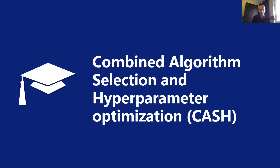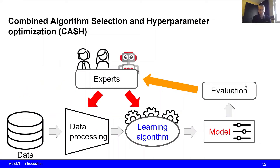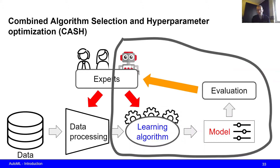In this video we're going to take a look at the problem of selecting both the algorithm as well as the hyperparameters, and this is what we call combined algorithm selection and hyperparameter optimization, or CASH in short. In the process figure we have seen before, the humans are responsible for the data pre-processing and the AutoML agent selects the learning algorithm as well as the hyperparameters.